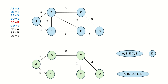Next we look at edge CD, which has vertices C and D. C is represented by one set and D is represented by a different set — they are different sets. So this edge can be added to the MST, and the representative sets are merged together.